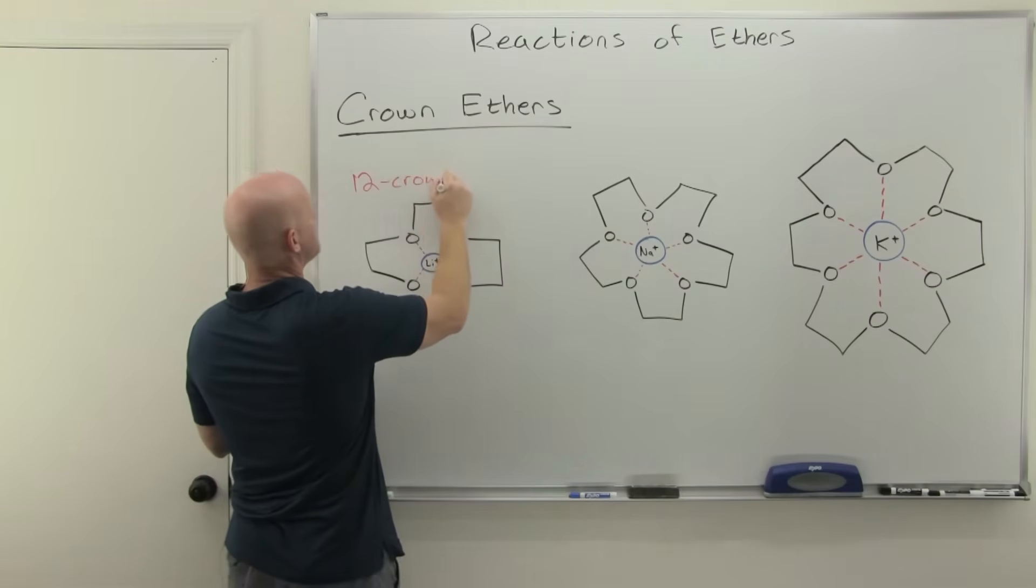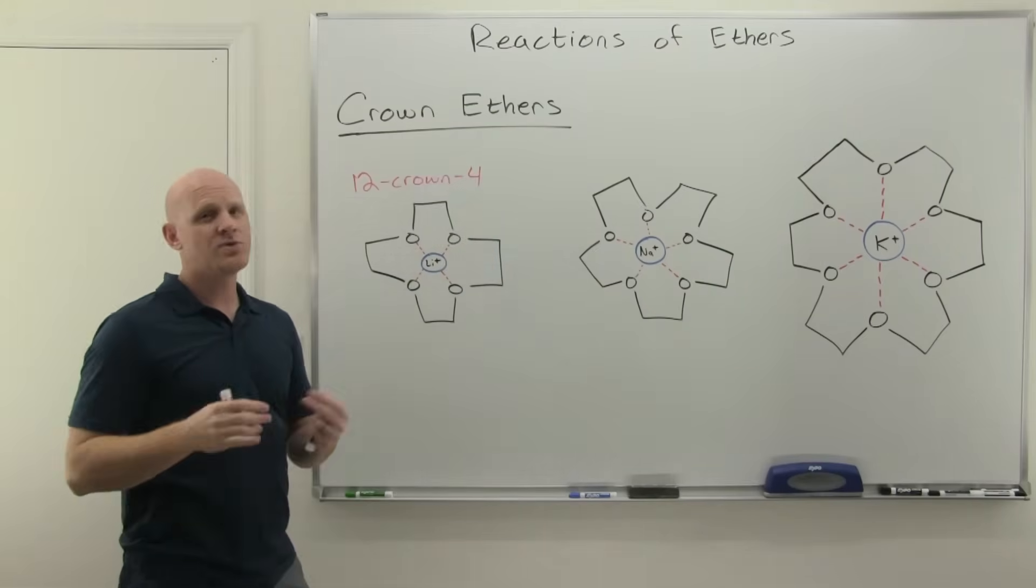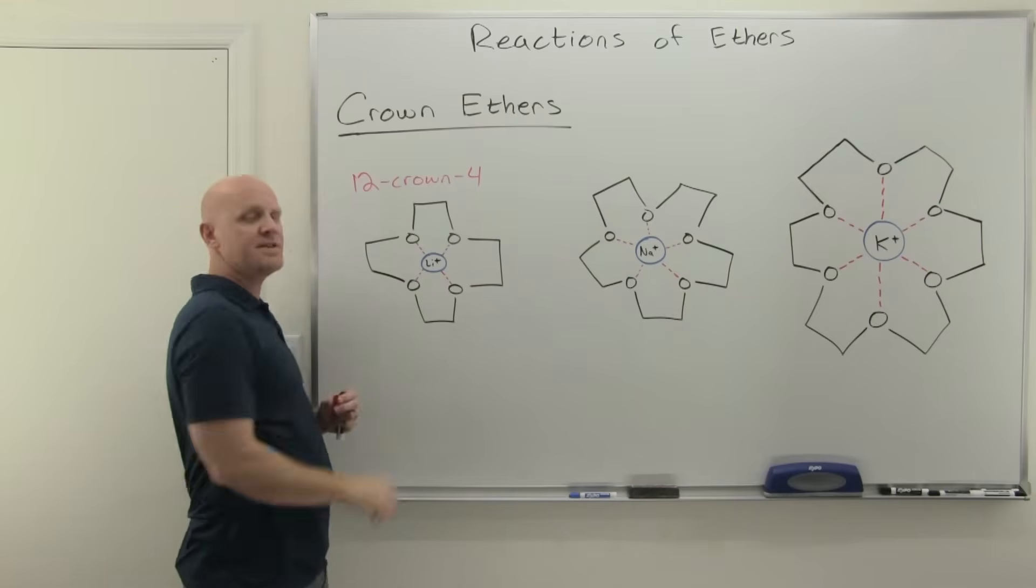And then crown, and then the number of oxygens. So this is 12-crown-4, and 12-crown-4 is the perfect size to solvate lithium ions.